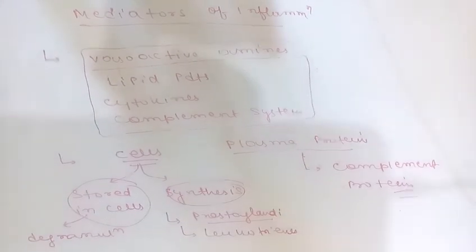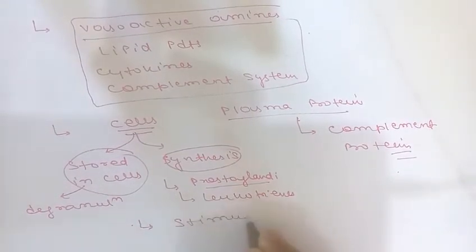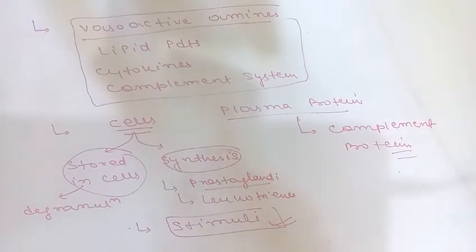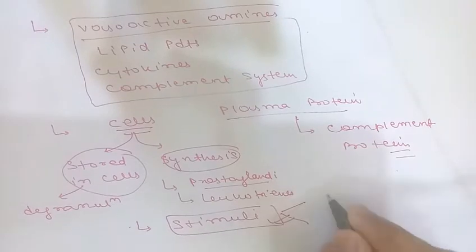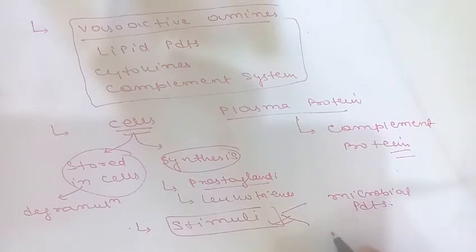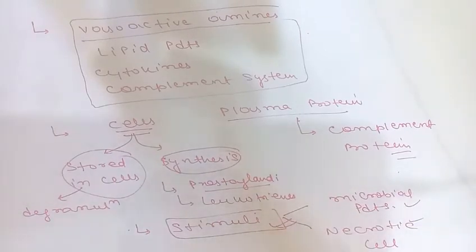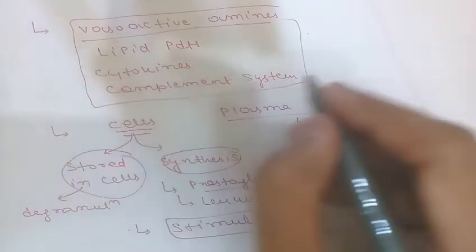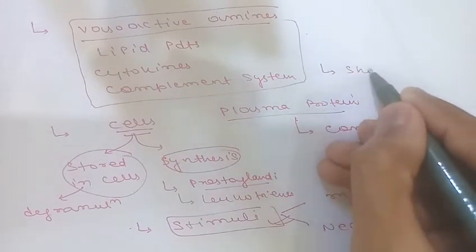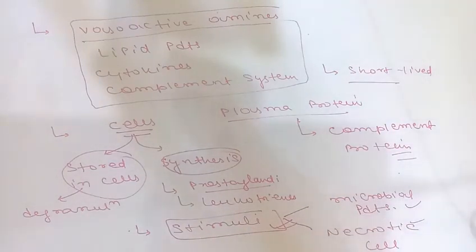Active mediators are produced only in response to stimuli. The stimulus may be microbial products or necrotic cells. Mediators are mostly short-lived — they quickly decay, are inactivated by enzymes, or are scavenged or inhibited. This is beneficial because it maintains a system of checks and balances that regulates mediator actions.